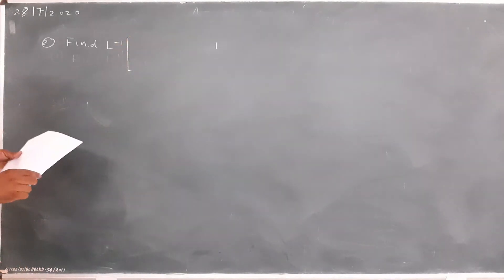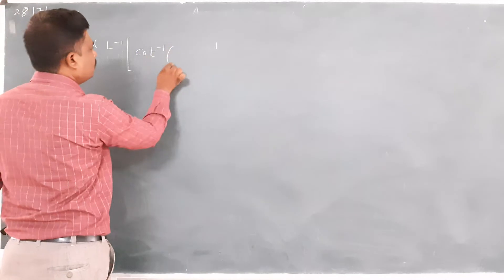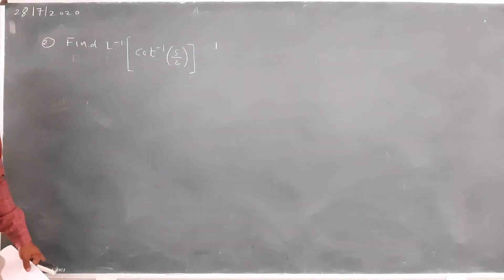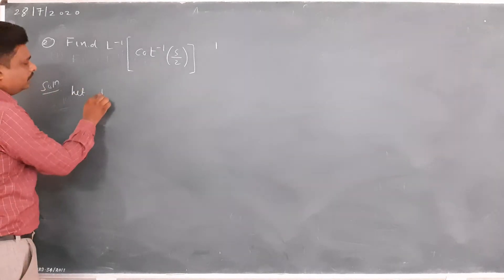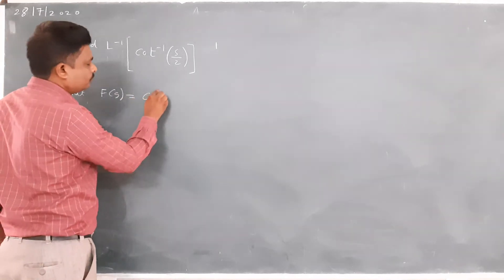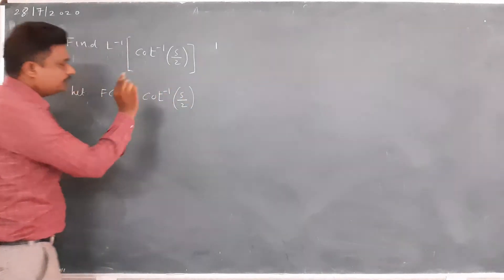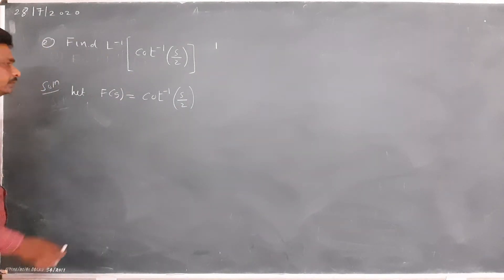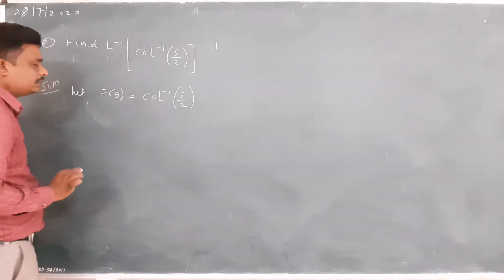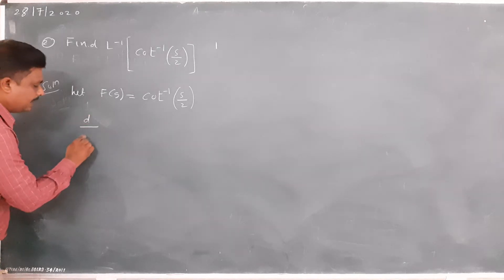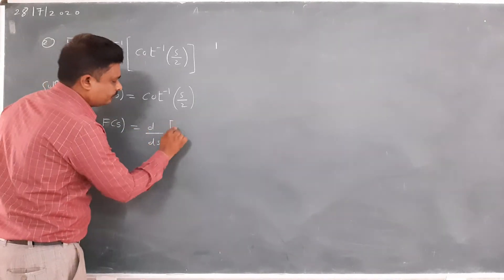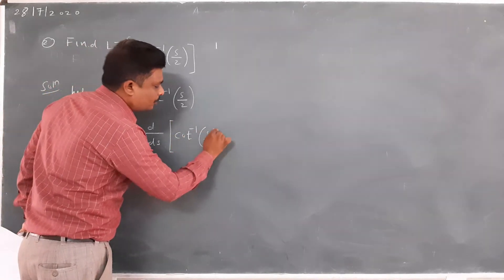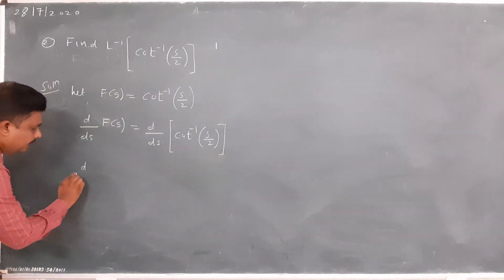Find L⁻¹{cot⁻¹(s/2)}. Again I will apply the same procedure. Let f(s) = cot⁻¹(s/2). Therefore differentiating both sides: d/ds of f(s) = d/ds of cot⁻¹(s/2).